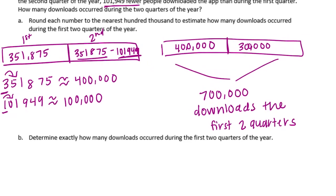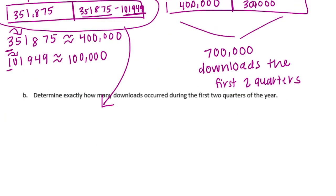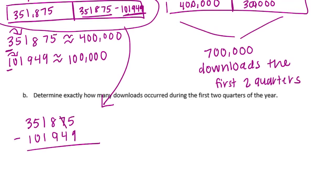Now it wants us to determine exactly how many downloads occurred during the first two quarters. Let's find the exact second quarter amount by subtracting: 351,875 minus 101,949. 5 minus 9, need to borrow — 15 minus 9 is 6. 6 minus 4 is 2. 8 minus 9, need to borrow — 18 minus 9 is 9. Need to borrow again — 10 minus 1 is 9. 4 minus 0 is 4. 3 minus 1 is 2. So the second quarter was 249,926.